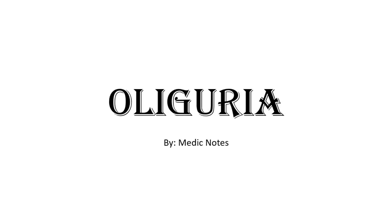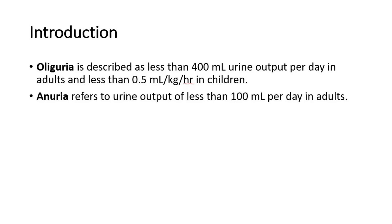Hi and welcome back to another video of Medic Notes. This video is on oliguria. For introduction of the terms, oliguria is described as less than 400 milliliters urine output per day in adults and less than 0.5 milliliters per kilogram per hour in children, whereas another term, anuria, refers to urine output of less than 100 milliliters per day in adults.